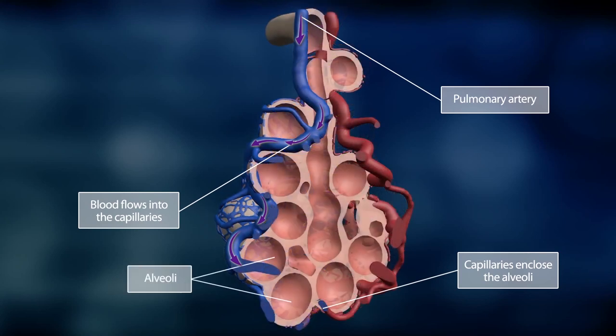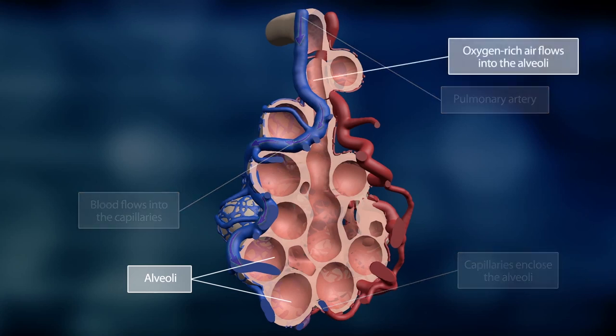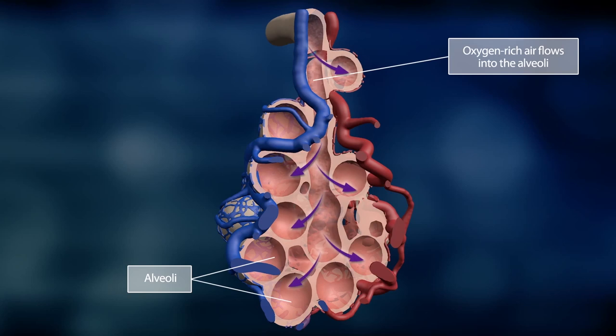They look like grape bundles hanging on the ends of the bronchial tubes. When we inhale, air flows down into the bronchial tubes and all the way to the alveoli.